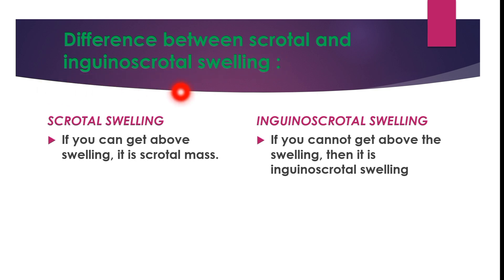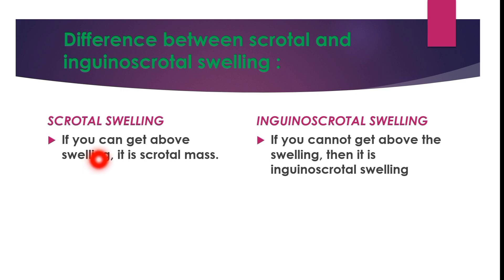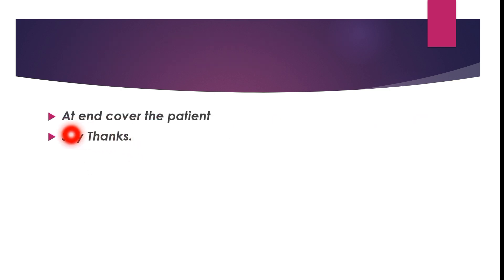To differentiate between scrotal and inguinal-scrotal swelling: if you can get above the swelling with your index finger and thumb, it is a scrotal mass. If you cannot get above the swelling, it is an inguinal-scrotal mass, meaning the mass is coming from the abdominal cavity through the inguinal canal down into the scrotum. If you can get above it, it is a scrotal mass arising from the scrotum or testes. At the end, cover the patient and thank them. That concludes the examination of inguinal hernia.